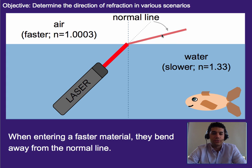So if you prefer you can also just memorize that as it enters a faster material it bends away from the normal line and as it enters a slower material it bends towards the normal line. Or like me you can use the wagon wheel analogy.